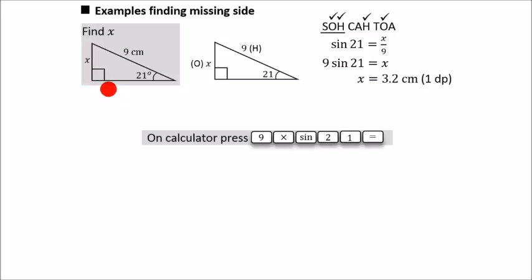the first step in working out a missing side is to figure out if you're going to use sine, cos or tan. You do that by looking at what you have.